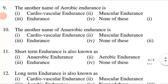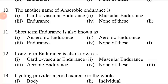The another name of aerobic endurance is dash. First option: cardiovascular endurance. Second option: muscular endurance. Third option: endurance. Fourth option: none of these. The answer is first option — cardiovascular endurance. The another name of aerobic endurance is cardiovascular endurance. The another name of anaerobic endurance is dash. Options: cardiovascular endurance, muscular endurance, endurance, none of these. The answer is second option — muscular endurance. The another name of anaerobic endurance is muscular endurance.